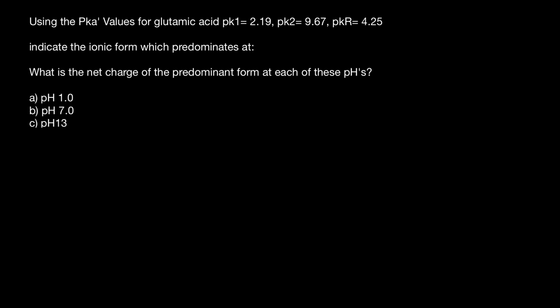Hello and welcome to Nikolai's genetics lessons. Today's question is: using the pKa values for glutamic acid — which are provided — indicate the ionic form which predominates at each pH of the solution. The second question is: what is the net charge of the predominant form at each of these pH values?